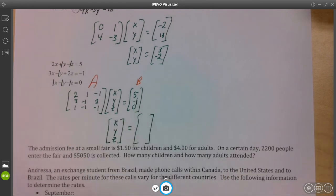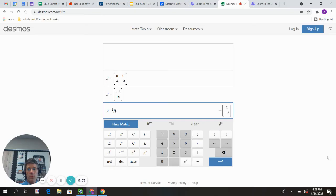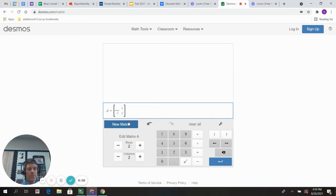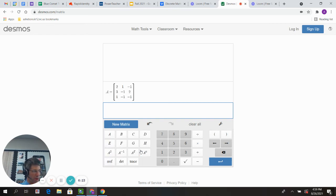Alright, same idea though. A inverse B. Let's do it. Let's go to the world's coolest website. Not big enough. Three rows, three columns. Let's type fast. Two, one, negative one, three, negative one, two, one, negative one, negative one. It's in there. Make sure it's right. Double check it. It is. We're good.